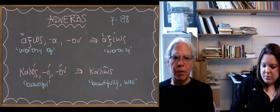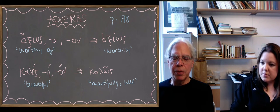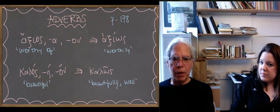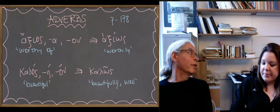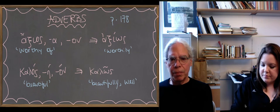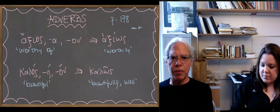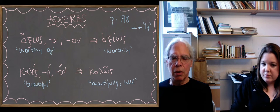The formation of adverbs is the equivalent of adding the suffix -ly in English, like slow, slowly, quickly, and so forth. So the equivalent in Greek is the suffix omega sigma omicron.